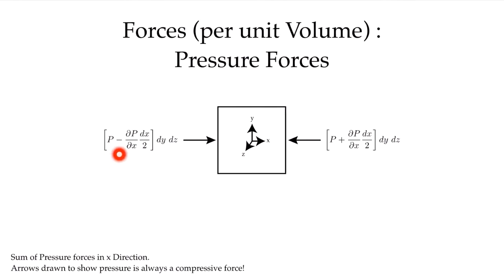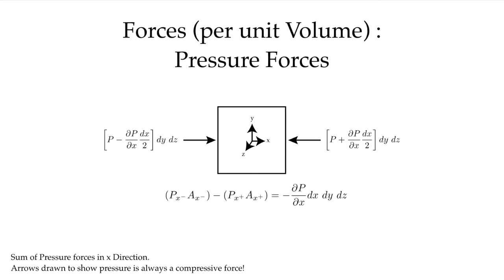We can use a Taylor series expansion to derive the pressure based on the value at the center. On the x-minus face, it'll be p minus dp/dx times the distance moved, then multiplied by the face area dy·dz to get a force. Likewise, the pressure on the x-plus face will be p plus dp/dx·(dx/2), times the area. The net force on the control volume is the difference between these two, which gives minus dp/dx times the volume.